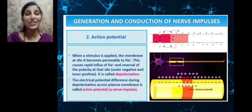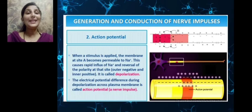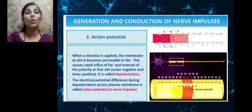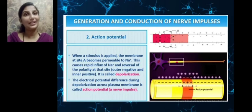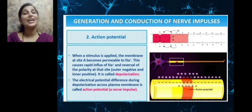The second step is the production of an action potential. Suppose a stimulus is applied — a change in the environment is perceived — at the membrane at site A of a long axon. Immediately at that site, the membrane becomes more permeable to sodium ions. This causes a rapid influx — inflow — of sodium from outside to inside, and a reversal of polarity at that site. Earlier, outside was positive and inside was negative; now the opposite occurs. This is called depolarization at site A.